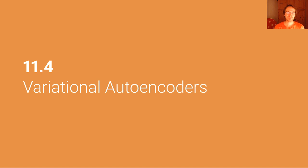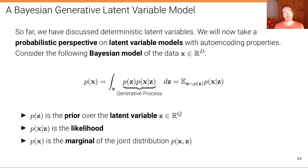After discussing two deterministic latent variable models, we are now going to talk about the first probabilistic latent variable model: the variational autoencoder, one of the most popular generative models. So far we have discussed deterministic models, but now we will take a probabilistic perspective on latent variable models with auto-encoding properties.